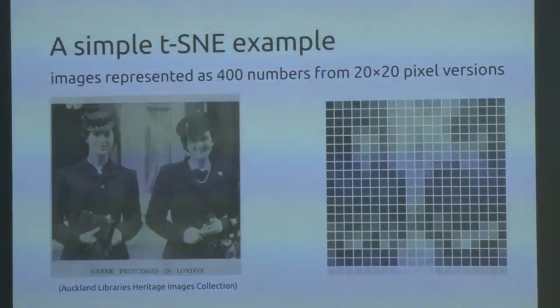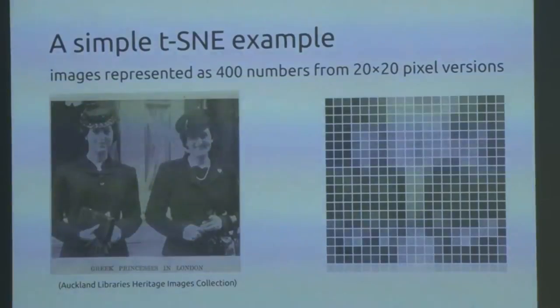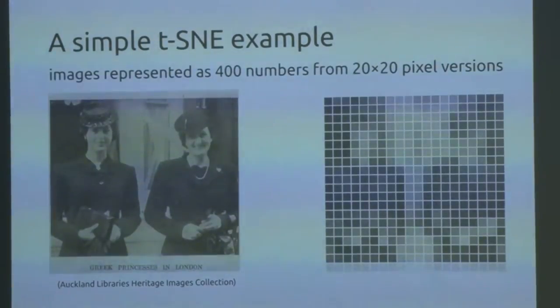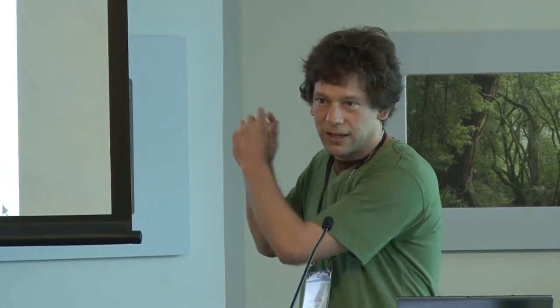If you take an image and reduce it to 20 by 20 pixels, and treat each pixel as a value, you get a vector of 400 numbers, giving you a 400-dimensional space. All images are cast somewhere in this space, and images similar in composition end up close together, while different images are far apart. TSNE casts that into a two-dimensional picture.